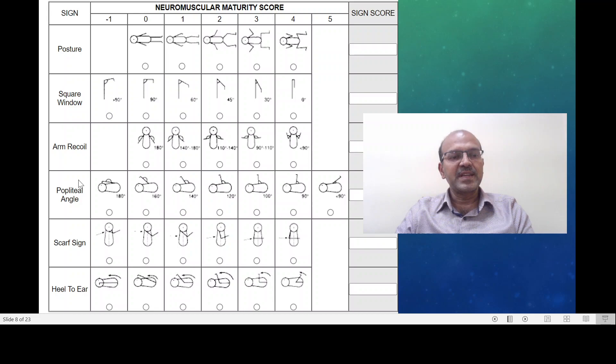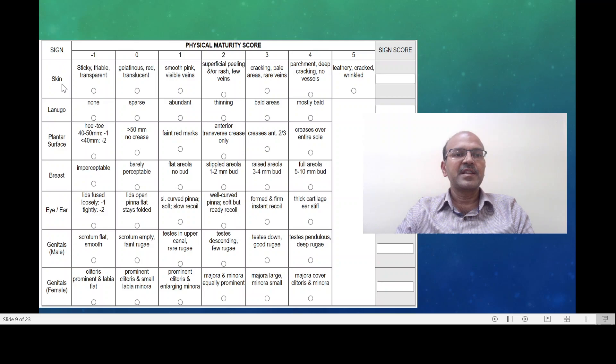We have the neuromuscular score and we have the physical maturity score. And we have posture, square window, arm recoil, popliteal angle, scarf sign and heel to ear. We will be reviewing how each one of these is measured. The physical score is more clear cut.